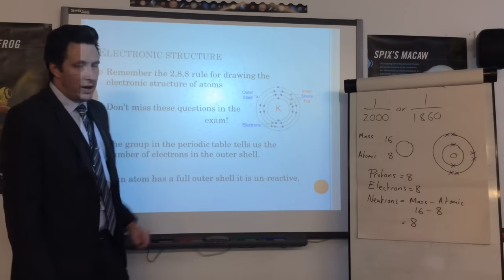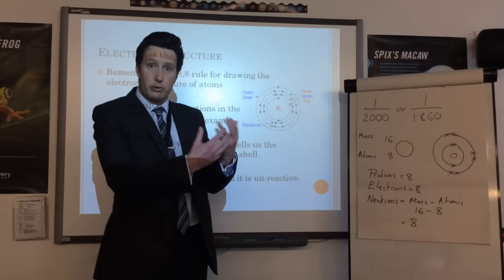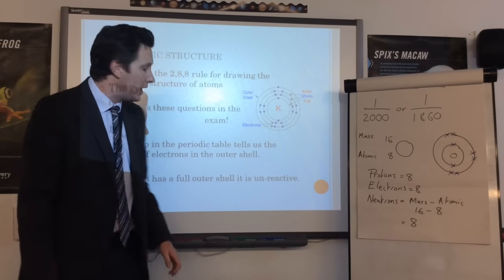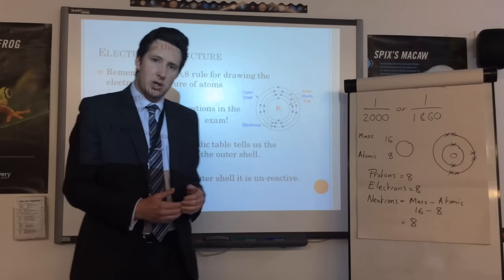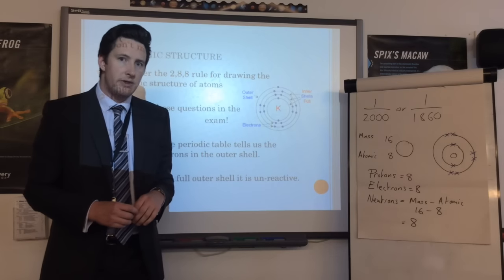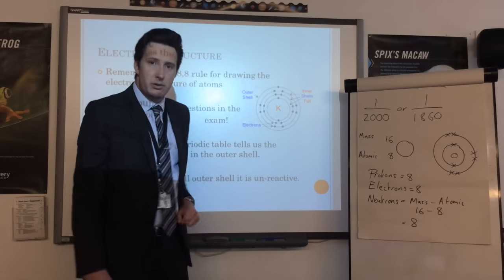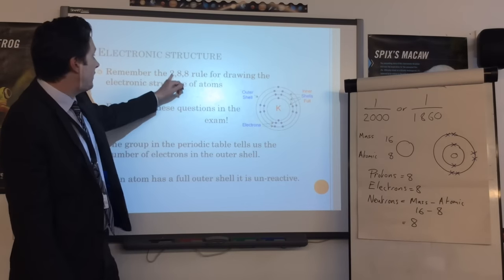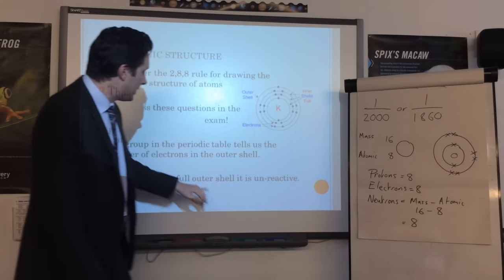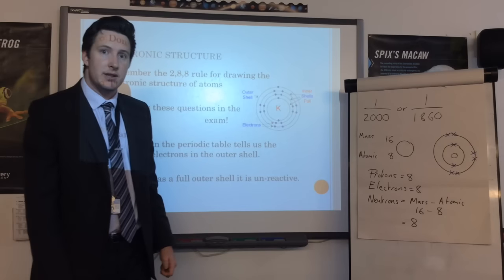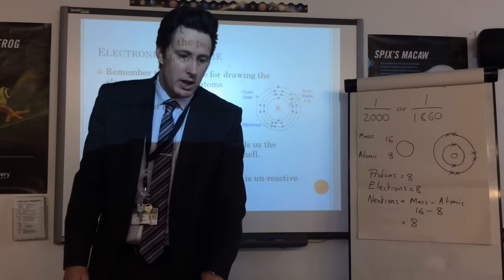If an atom has a full outer shell, it is unreactive. Normally that's only the noble gases in group zero of the periodic table - they have a full outer shell so they are unreactive. If a question asks which of four atoms is unreactive, pick one whose electronic structure ends in two or eight - that's the full outer shell pattern you're looking for. So that covers atoms and electronic structure.